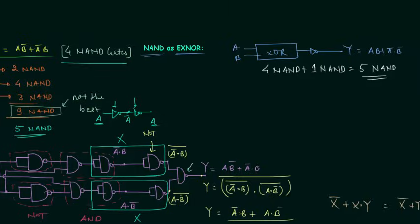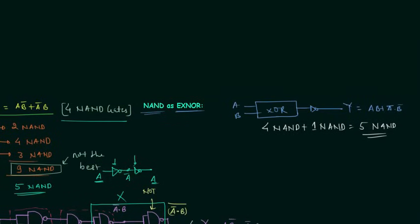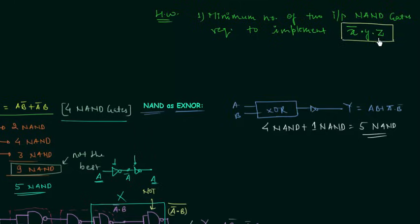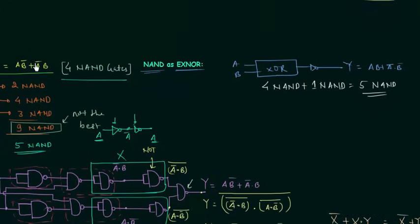Now we move to homework problems. In the first homework problem, you have to find the minimum number of 2-input NAND gates required to implement X complement and Y and Z. You have to follow the same procedure as the implementation of the XOR gate.